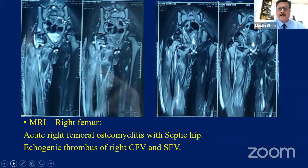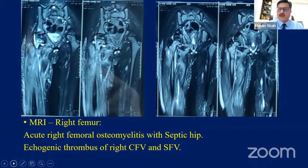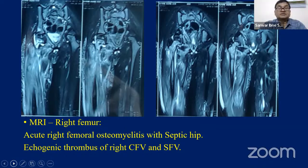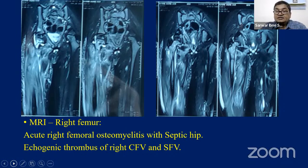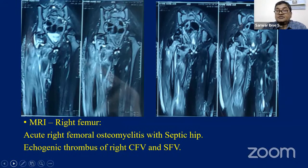What is the indication for getting an MRI in a suspected case of septic arthritis of the hip? Do you get MRI in all cases or is it just a clinical diagnosis? Not always — in cases where I don't have a clear indication of what has happened, or if the hip is probably involved, in those cases we go for MRI.